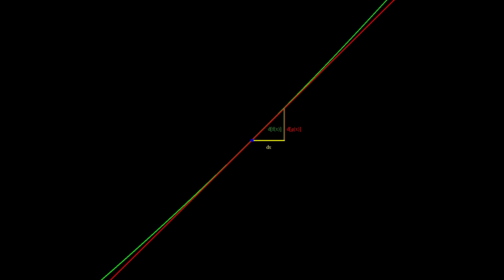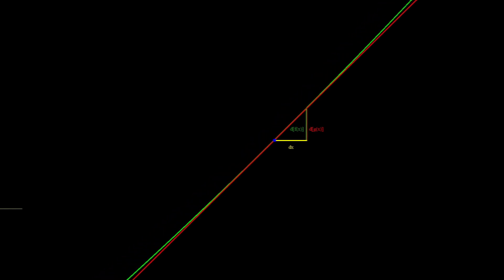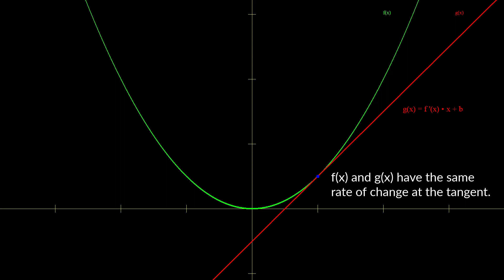we can see that df of x approaches dg of x. This should make sense because the slope, that is the rate of change of both the functions at the tangent point, is the same. Therefore, a tiny change in x will result in an equivalent change in both g of x and f of x.